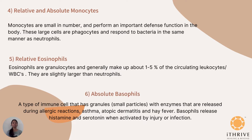Coming to the other types of WBCs — monocytes, eosinophils, and basophils. Monocytes are comparatively smaller in number but also utilize the process of phagocytosis. They are larger in size and respond to bacteria just as neutrophils do. Eosinophils are granular in structure and make up about 1–5% of your WBCs. They are slightly larger than neutrophils and show an infection response; if they are high in your blood, it indicates a high infection in your body.